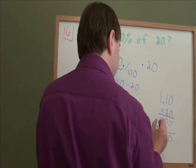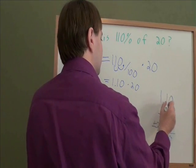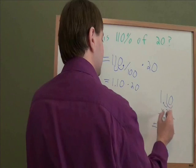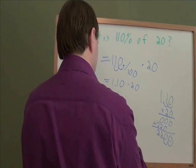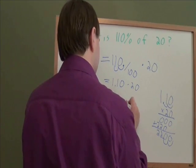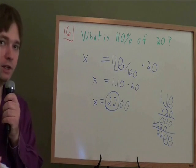And then the trick to multiplying with decimals is you have to count how many decimals did we start with. We started with two decimal places in the things we multiplied together. So we need two decimal places at the end. x is 22.00, or just 22. And that is our answer.